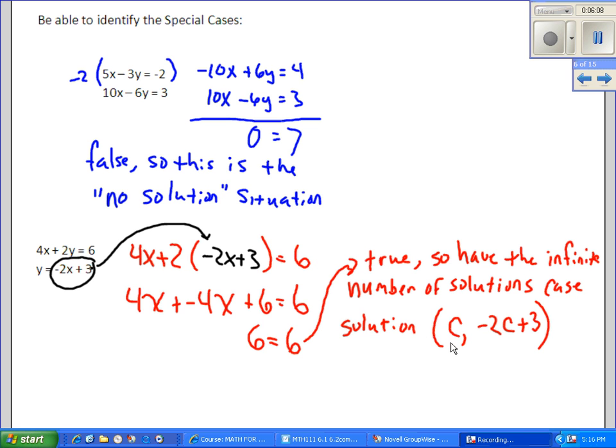And so to describe the solution set, we can say let x be an arbitrary constant c. And then the y-coordinate would be essentially negative 2c plus 3, negative 2x plus 3.